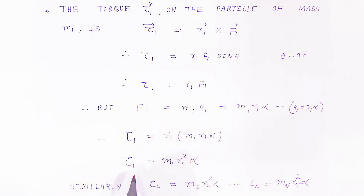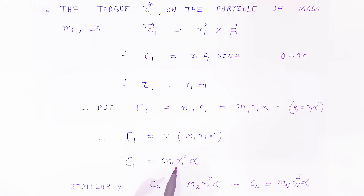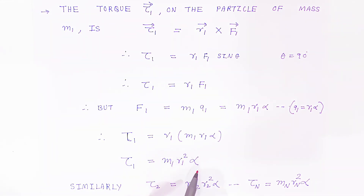The torque acting on the first particle gives us the expression: tau1 equals m1 r1 squared alpha, where alpha is the angular acceleration. This is the torque acting on the first particle.